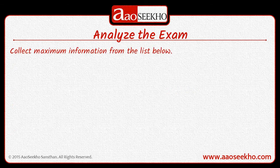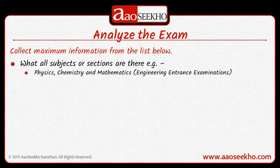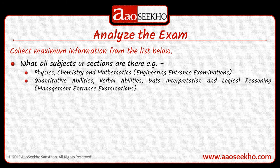Collect maximum information from the list below. Find out what all subjects or sections are there. For example, Physics, Chemistry and Mathematics are there in almost all Engineering entrance examinations, while Quantitative Abilities, Verbal Abilities, Data Interpretation and Logical Reasoning are the sections from Management entrance examinations. You have to find out what all subjects or sections are there in the exam that you are targeting.